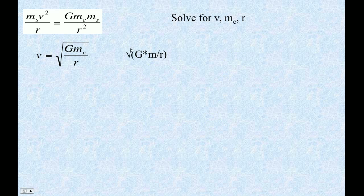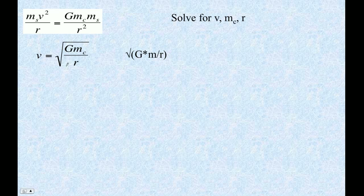This is how you type it into the calculator. You go: square root, left parenthesis, G — which is 6.67 times 10 to the minus 11, so you type 6.67 E negative 11 — then M, which is probably a large number in scientific notation, divided by R, which is also another large number in scientific notation. Write this down in your notes. Pause right now — in general, substitute the numbers for the variables.